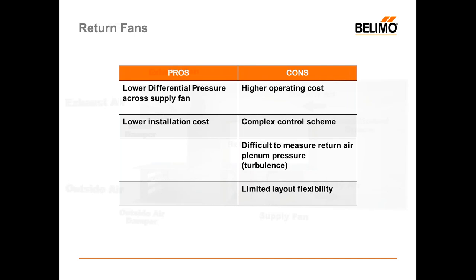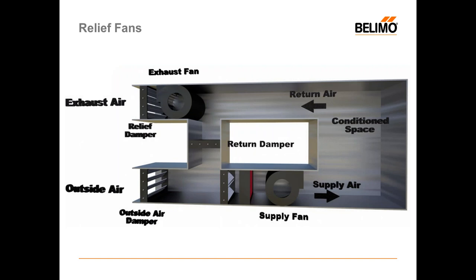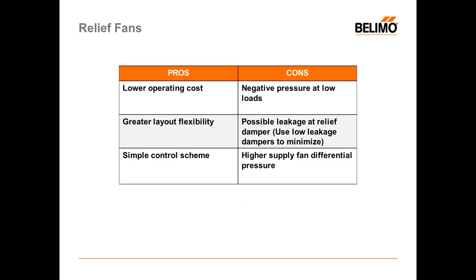Exhaust fans: an exhaust fan economizer consists of an additional fan mounted in the AHU or rooftop economizer section. The fan discharges air to the exhaust duct, or in the case of a rooftop unit, directly outdoors. By monitoring the space pressure, you can cycle or modulate the fan on and off. By only using that relief fan when you need to, you can lower operating cost. There's greater layout flexibility and simpler control because you can use just one pressure transducer for the building. The cons: it sometimes causes negative pressure at low loads, requires a larger supply fan to make up for the differential pressure when the relief fan is not in use, and there is possible leakage at the relief fan air damper when the fan is off.